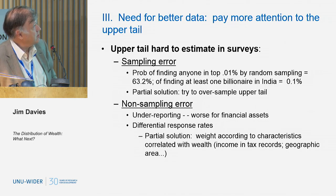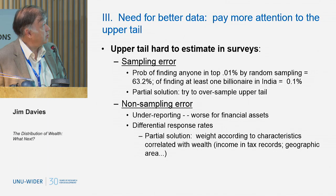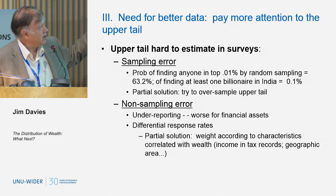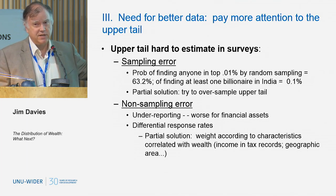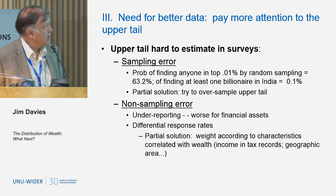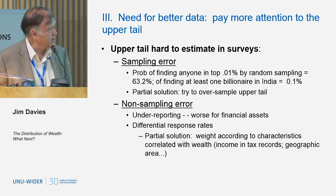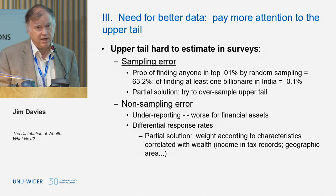More attention needs to be paid to the upper tail of the wealth distribution — this is not controversial, people who produce the data are well aware of the problems. There is both sampling error and non-sampling error. The sampling error: in a sample of 10,000 households, your chances of getting someone in the top 0.01% by random sampling are only 63%, and the chances of getting at least one billionaire in India in a sample of 10,000 is only 0.1%. But the non-sampling error is a much worse problem — once people are past a certain wealth level, they're not going to answer your survey. There's a big problem of differential non-response and under-reporting, which validation studies show is especially important for financial assets.